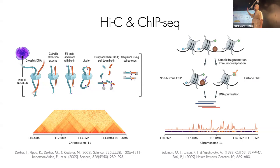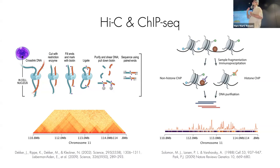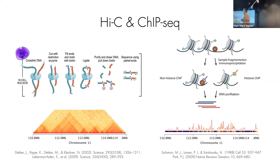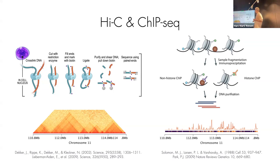Hi-C involves restriction enzyme cutting, re-ligation, etc. The key point is it gives you these contact maps. On the x-axis and y-axis you have chromosomal position — in this case four megabases of DNA. If two pieces of DNA interact, you see peaks or triangles, meaning they were very often in contact in your cell population. If it's yellowish, they are not in contact much. The second experiment was ChIP-seq, which tells you whether a particular histone mark is present — in this case H3K27 acetylation.